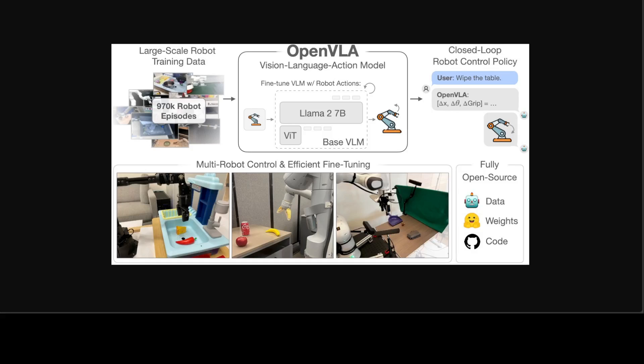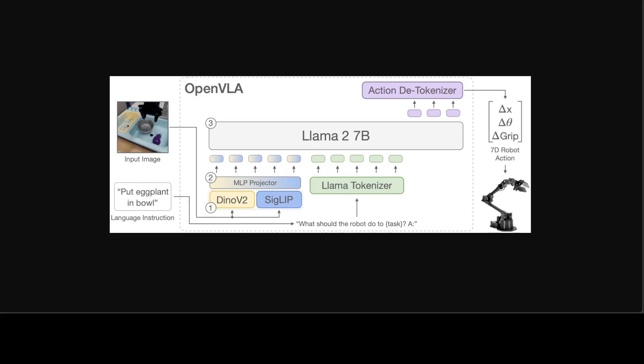On the project page they have shared various benchmarks you can check out. In the architecture diagram you can see the three steps — especially the LLaMA 2 7 billion language model used to predict tokenized output actions. These open source models are being used in real-world applications with robots, and I believe the true magic of generative AI will happen when we combine software like LLMs with hardware like robots.